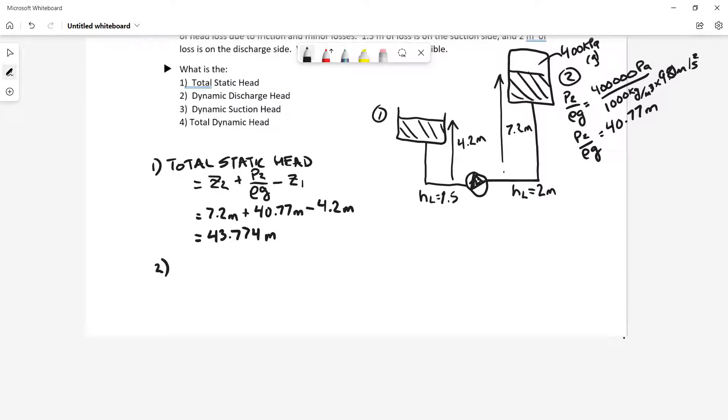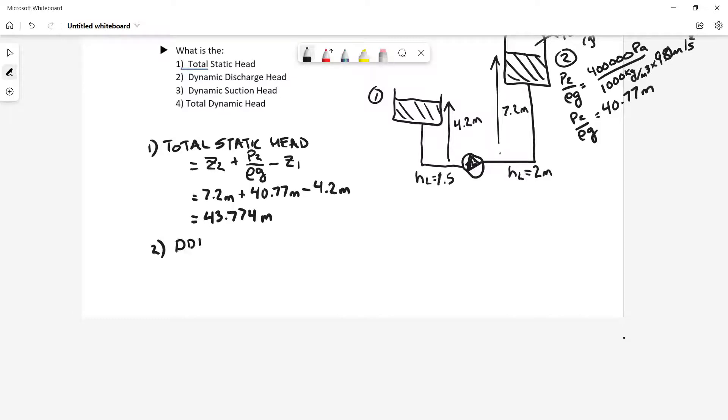Okay, so I also have my dynamic discharge head. And as we worked out before, my dynamic discharge head is going to be equal to my dynamic or my discharge suction head plus my discharge pressure head plus my head loss on the discharge side minus my velocity squared over 2G leaving the pump. Okay, so the velocity in this case is zero. And what I'm left with is my head height 7.2 meters plus my pressure head 40.77 meters plus 2 meters of head loss.